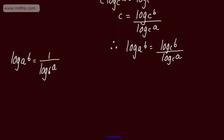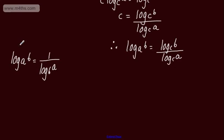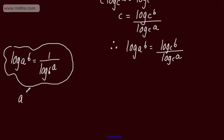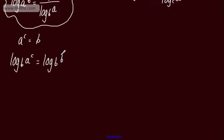Let's look at deriving that. Going back to A to the C is equal to B, this time I'm going to take logs of both sides using base B logarithms. So we have log to the base B of A to the power of C is equal to log to the base B of B. We know that log to the base B of B is 1, so using the power law, C multiplied by log to the base B of A is equal to 1.